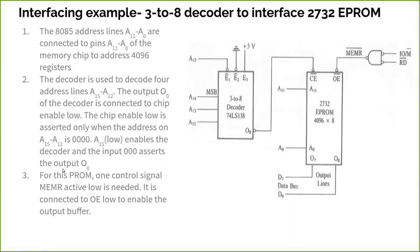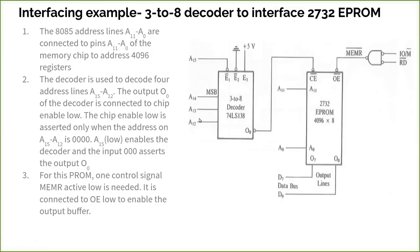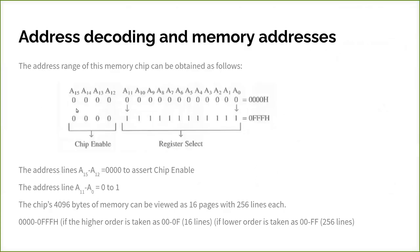For this EPROM, one control signal MEMR active low is needed because this is a read-only memory, so only reading signal is there. It is connected to OE low to enable the output buffer. Now the address range of this one can be obtained as: here 000, and here actually we have 0, so this will be inverted and connected as 1, and this will be 0. So A15 must be 0, and all these things are made from 0 to 1.